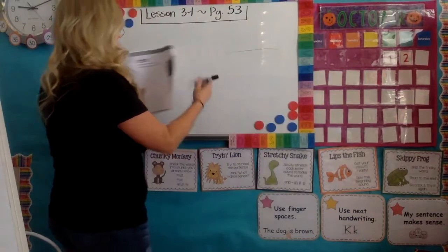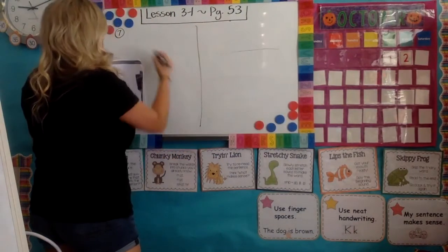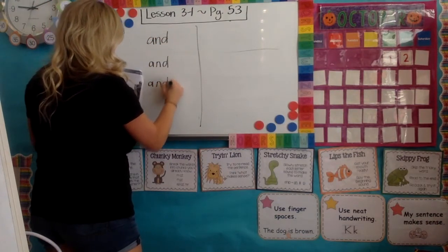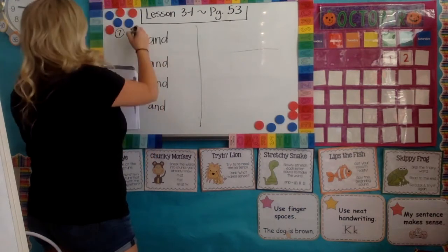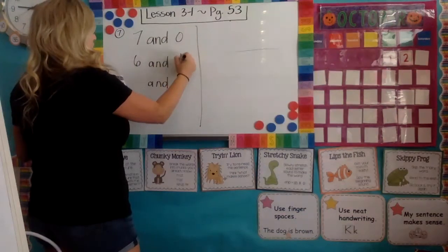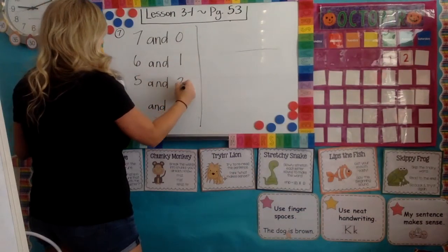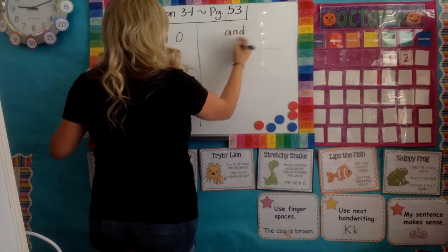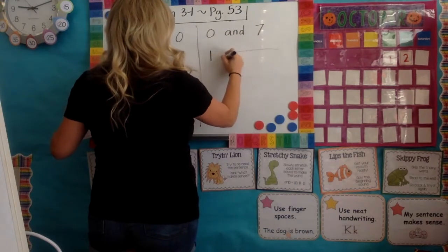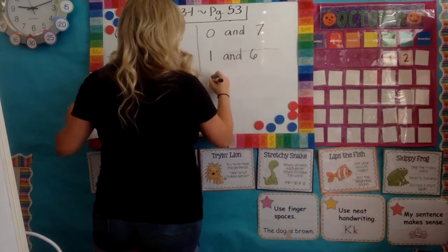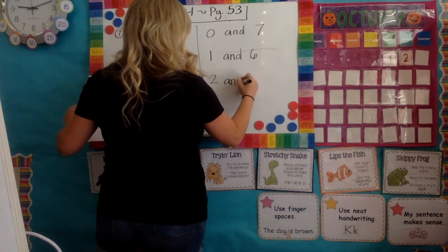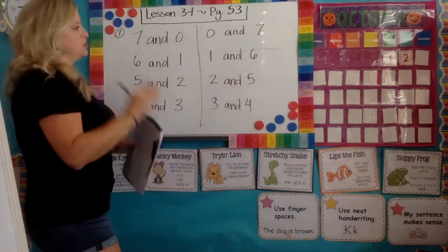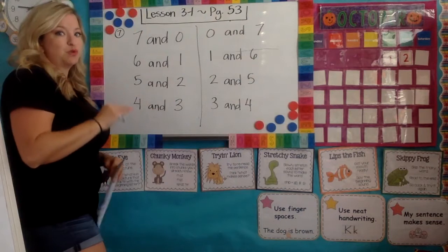You have a line down and then 'and' for each pair. The first was seven and zero, then six and one, five and two, four and three. On the other side we flip: zero and seven, one and six, two and five, three and four. I hope you look at this and see some really cool patterns — because there are some really cool patterns.